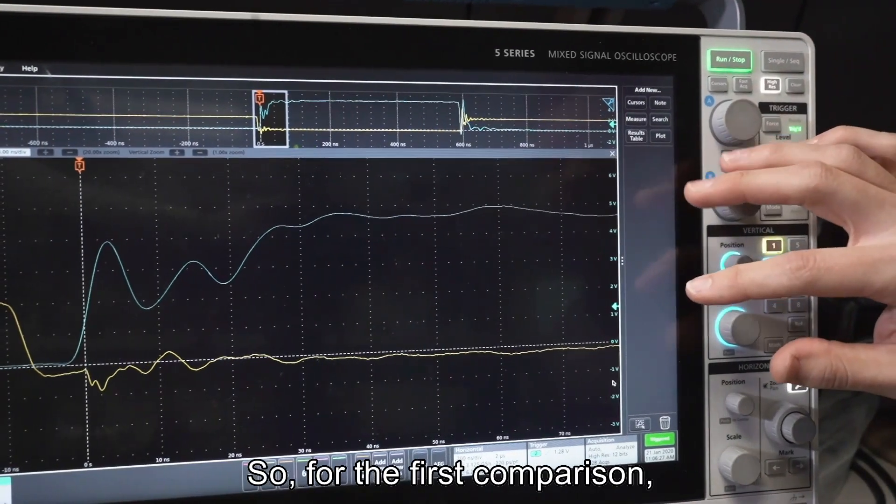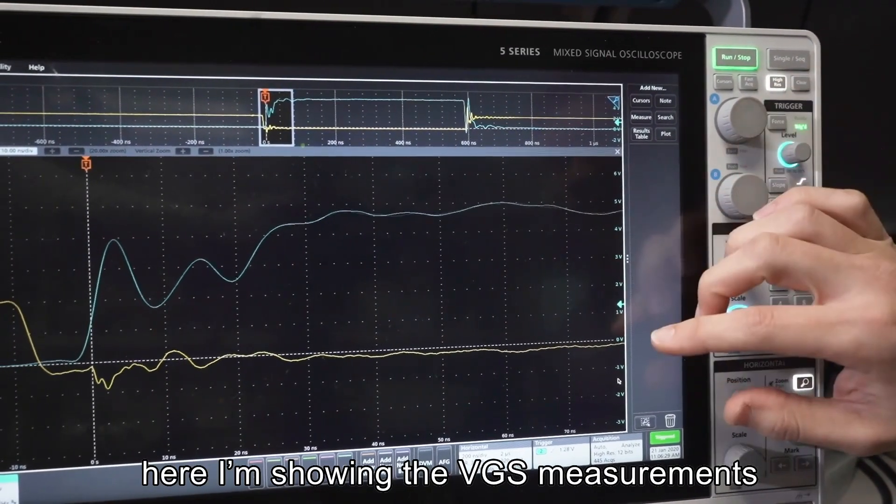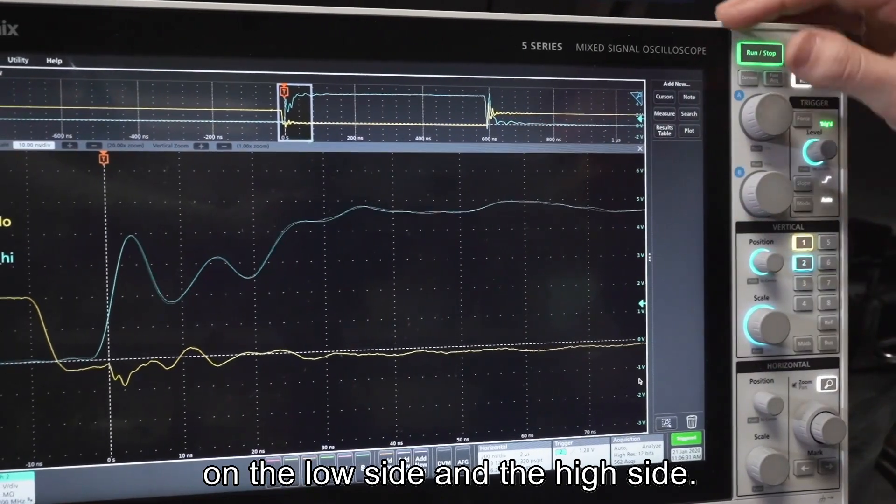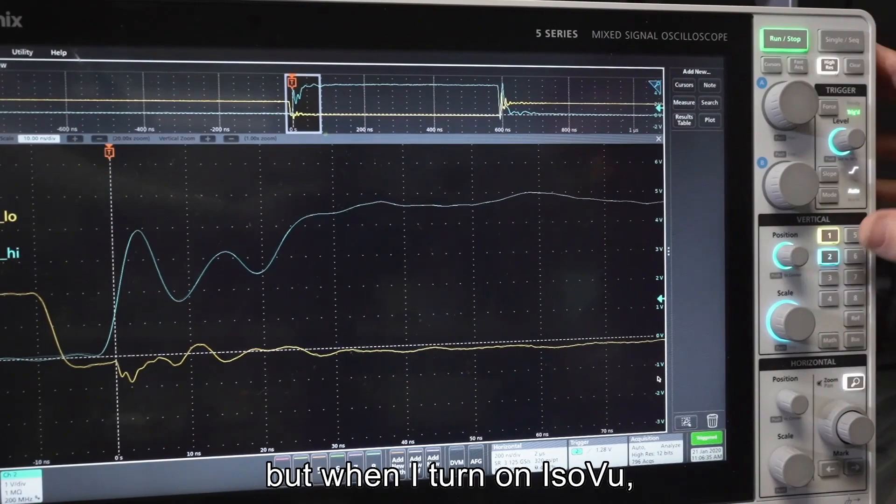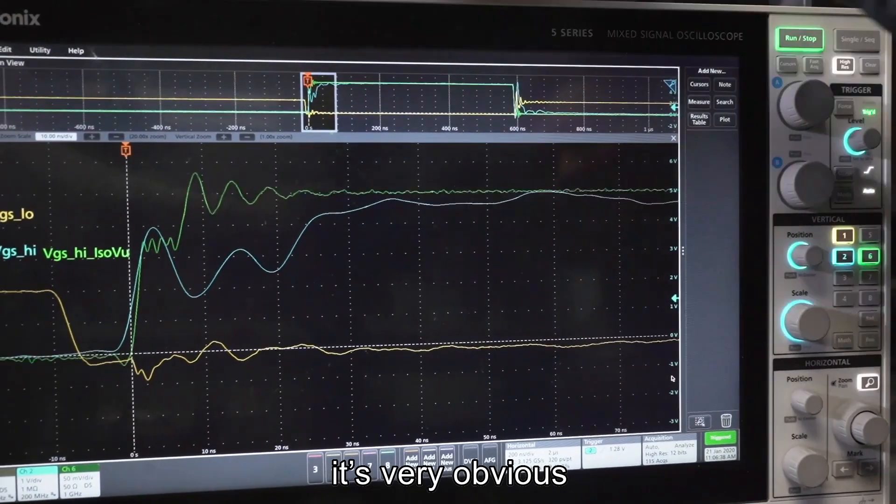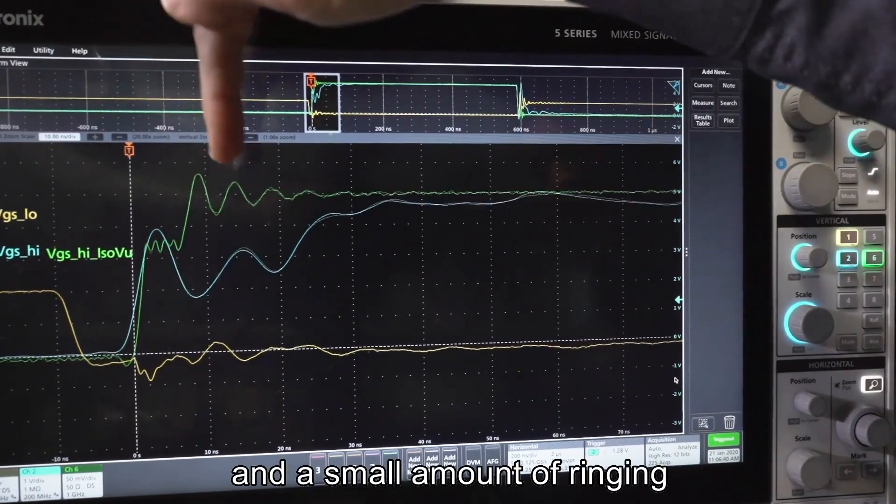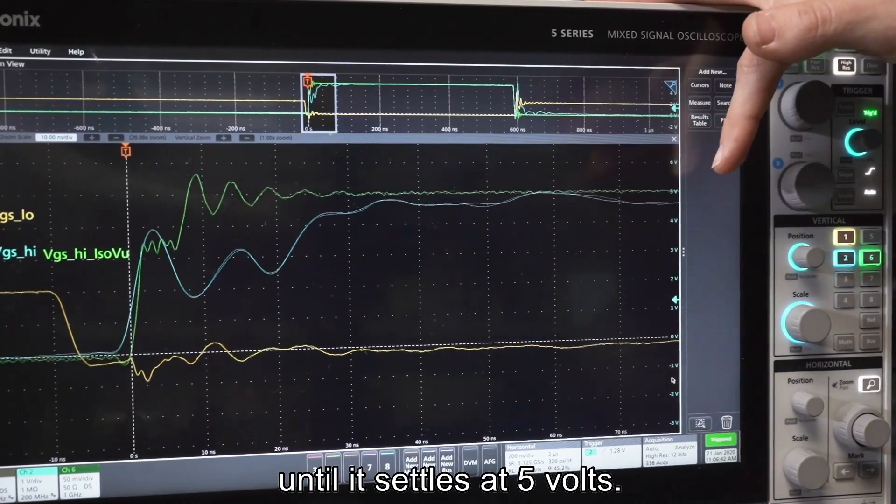So for the first comparison, here I'm showing the VGS measurements on the low side and the high side. On the high side, you can vaguely tell what's going on, but when I turn on IsoVu, it's very obvious. There's a clear Miller plateau and a small amount of ringing until it settles at 5 volts.